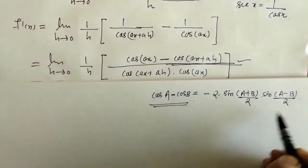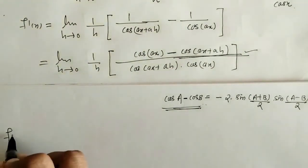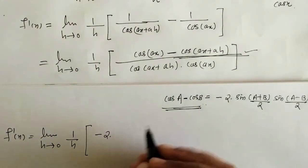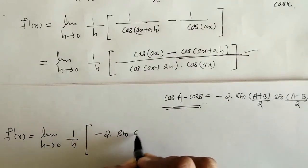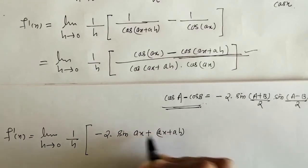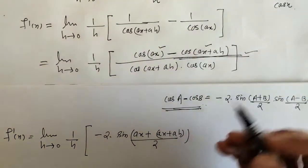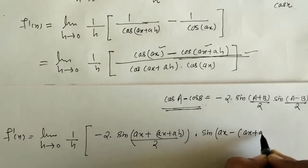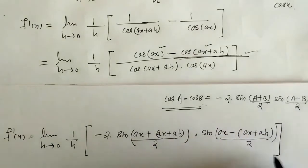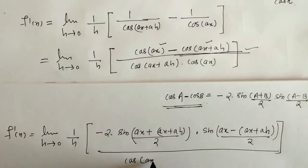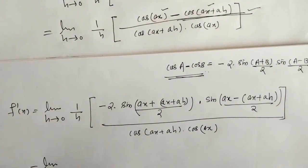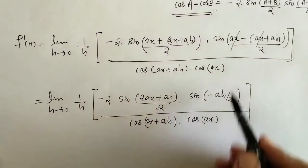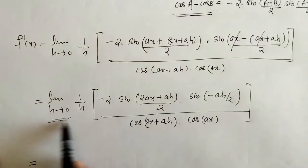We write the numerator using this factorization formula. So f'(x) = limit h→0 of (1/h) × [-2 × sin((ax + ax + ah)/2) × sin((ax - (ax + ah))/2)] divided by cos(ax + ah) × cos(ax). Now we check whether we can put h = 0 directly.